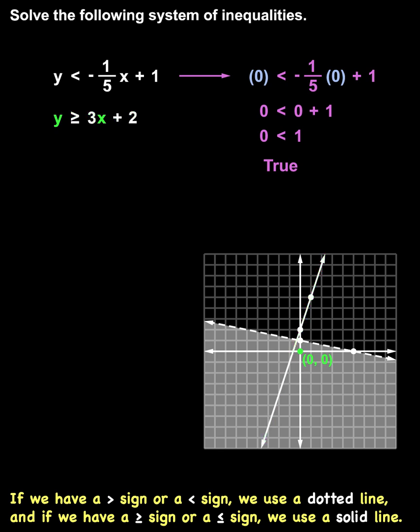Plugging a 0 into our second inequality for both x and y, we have 0 is greater than or equal to 3 times 0 plus 2, which simplifies to 0 is greater than or equal to 0 plus 2, or 0 is greater than or equal to 2.